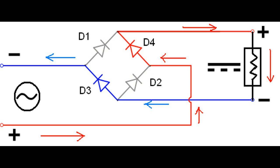During the second half cycle, the lower end of the transformer secondary is positive with respect to the upper end and diodes D3 and D4 are forward biased and D1 and D2 are reverse biased.